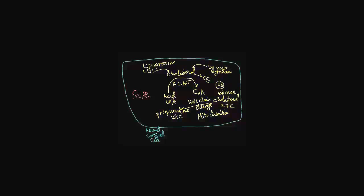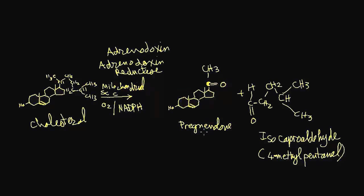If the STAR molecule is mutated, this results in a disease called congenital lipoid adrenal hyperplasia, characterized by severe cortisol and aldosterone deficiencies because of the failure of cholesterol to enter the mitochondria for the first rate-limiting step — the cleavage of six carbons from the side chain.